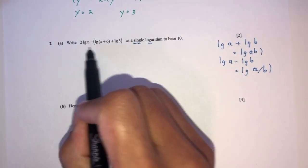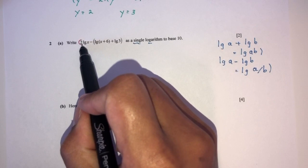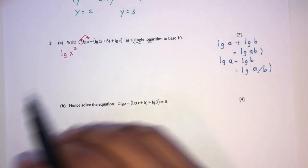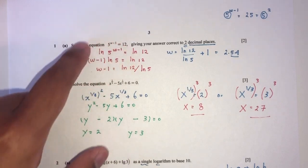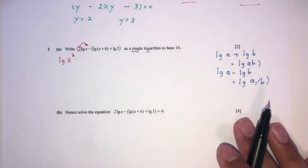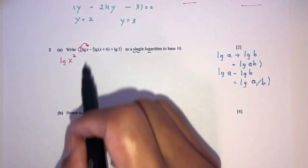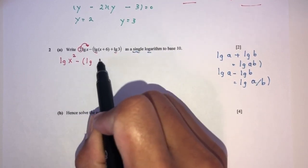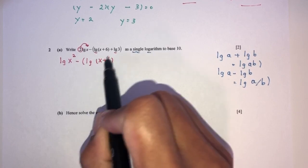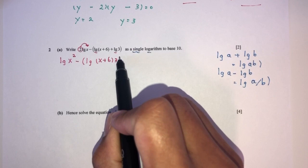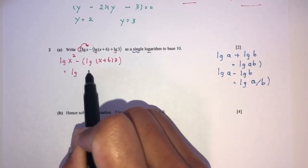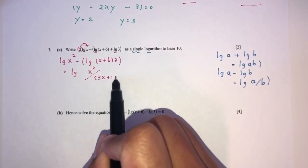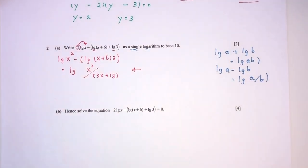Using those laws, we can send the coefficient to the top as a power, giving log x squared. Combining the log terms: we have a minus, so we divide. The result is log of x squared over 3x plus 18. This is your answer for part A, expressing as a single log.